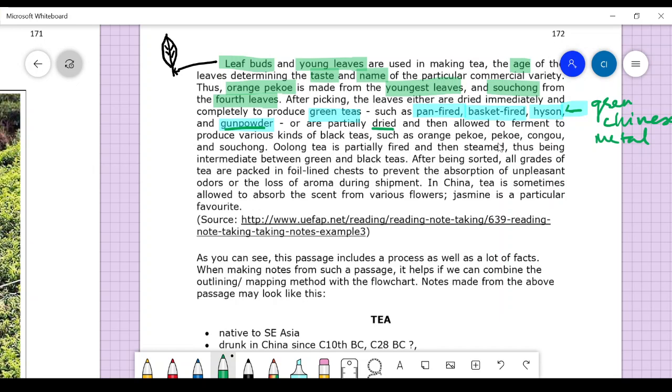Or they are partially dried and then allowed to ferment to produce various kinds of black teas such as orange pekoe, pekoe congo, and souchong. Oolong tea is partially fired and then steamed, thus being intermediate between green and black tea.